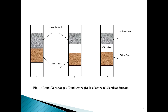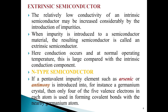Figure 1 shows the bands for conductor, insulator, and semiconductors. Extrinsic semiconductor: the relatively low conductivity of an intrinsic semiconductor may be increased considerably by the introduction of impurities. When an impurity is introduced to a semiconductor material, the resulting semiconductor is called an extrinsic semiconductor. Here, conduction occurs, and at normal operating temperatures, this is large compared with the intrinsic conduction component.